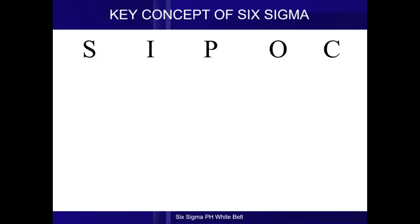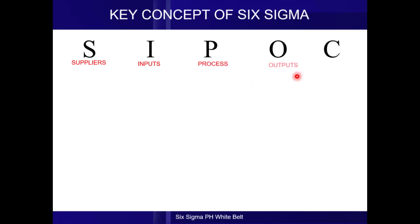The tool that would help us understand the Six Sigma equation is the SIPOC diagram. A SIPOC diagram is a process map that we facilitate to understand the high-level steps of our process. The S stands for Suppliers, the I stands for Inputs, the P stands for Process, the O stands for Outputs, and the C stands for Customers.